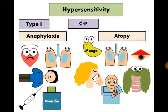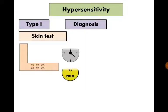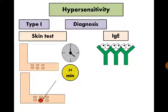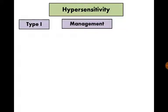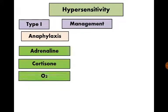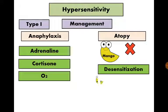For diagnosis, a skin test is done to detect the type of allergen to be avoided later. Also, total and specific immunoglobulin E levels are usually high. Anaphylaxis should be treated immediately by adrenaline, cortisone, and oxygen. Atopy is managed mainly by avoiding allergens or by desensitization.